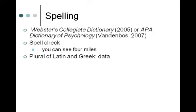Plural forms of Latin and Greek words can be tricky. The most common one students struggle with is 'data.' Data is a plural word — it's not 'the data is,' it's 'the data are.' Data is treated as plural. You would rarely use the singular 'datum.' Get used to thinking about data as a plural word, even though it doesn't end in an S.